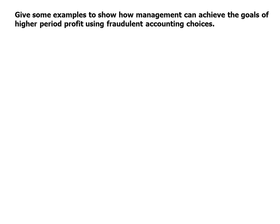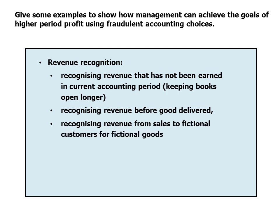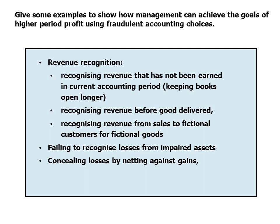Fraudulent accounting choices to inflate profits include: recognizing revenue not yet earned in the current period by keeping the books open longer; recognizing revenue that is anticipated before goods are actually delivered; fabricating goods. On the expense side: failing to recognize losses from impaired assets, concealing losses by netting them against gains, and evergreening bad debt — where banks lend customers in default enough money to service their outstanding debt so it appears to be performing.